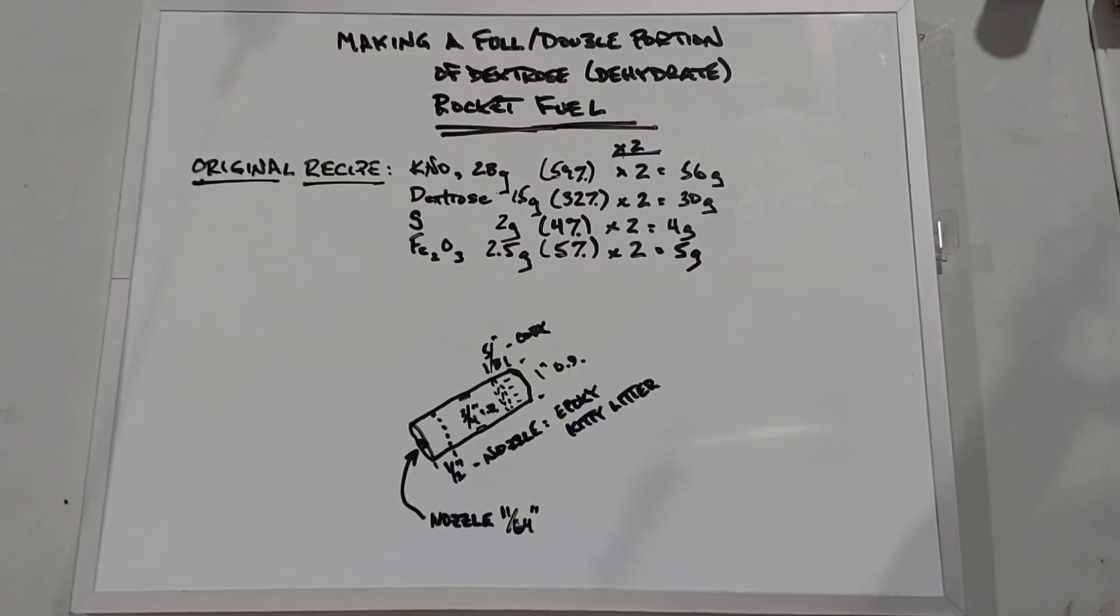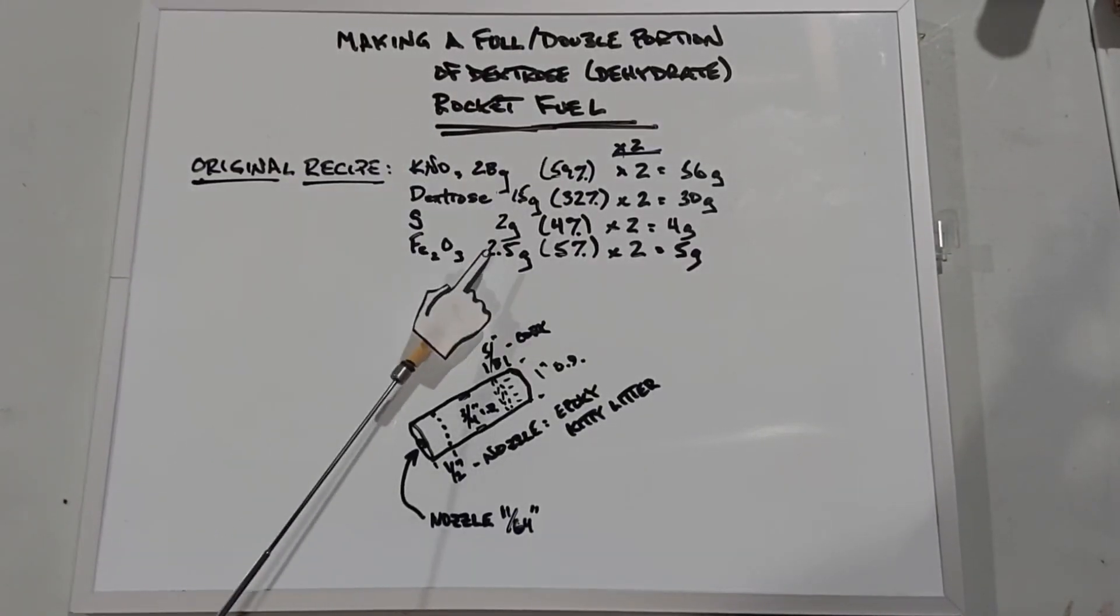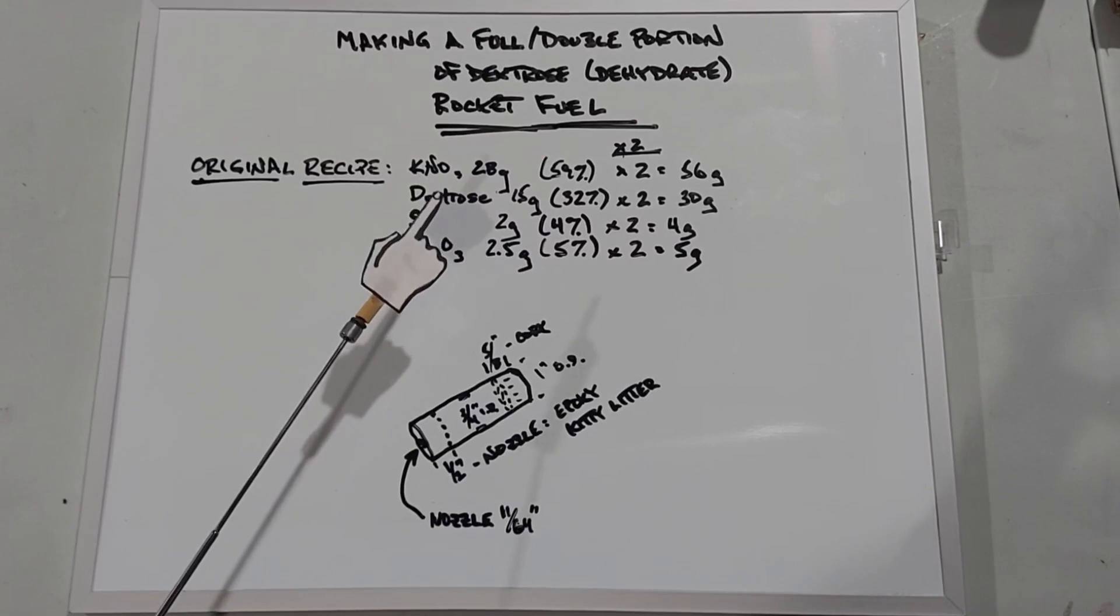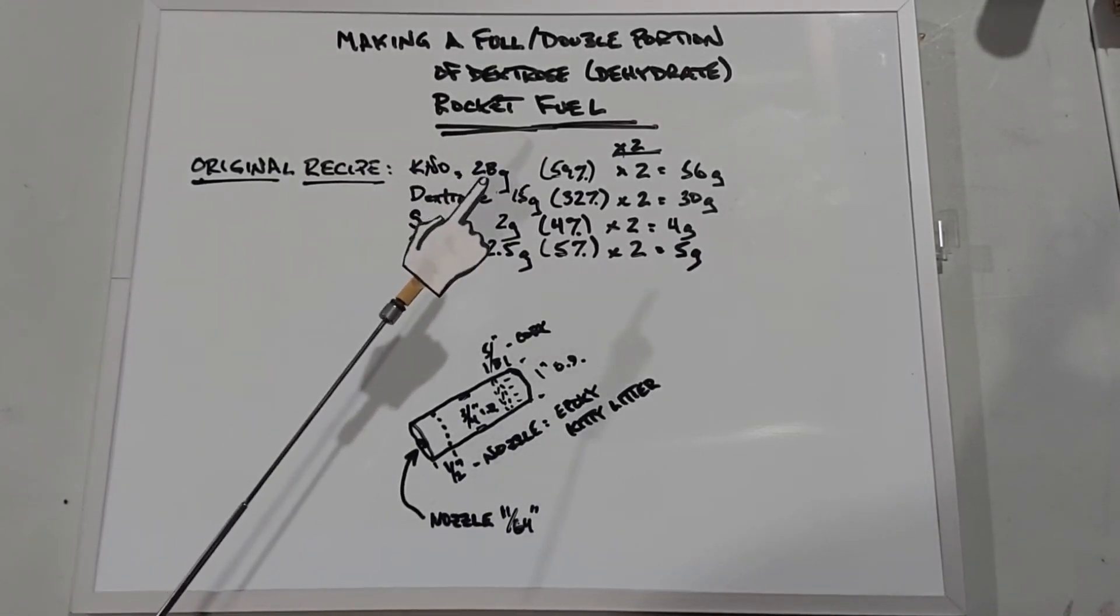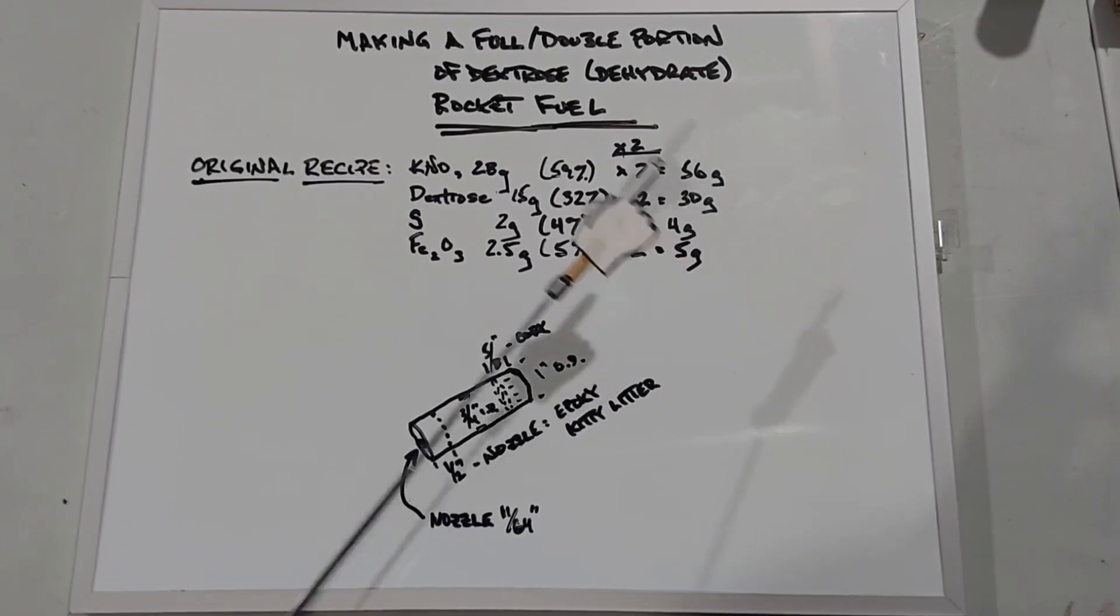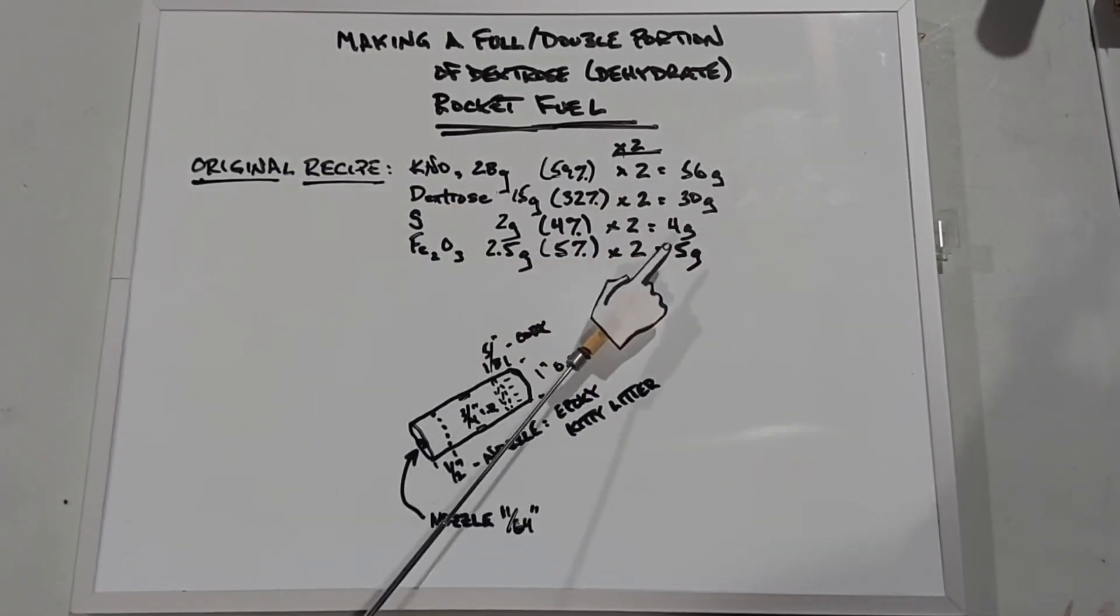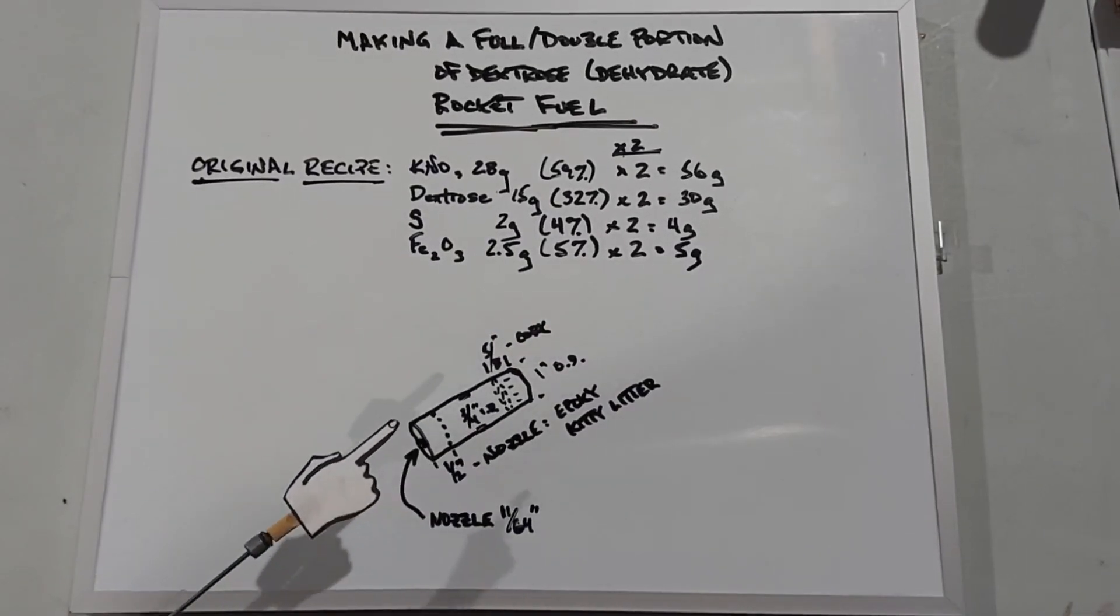Moving on here, the original recipe is right here for a dextrose rocket engine, partly tweaked by myself. When we did the test engines I cut this recipe in half, but to make the larger engine I'm going to double the original recipe. So potassium nitrate 56 grams, dextrose 30 grams, sulfur 4 grams, and iron oxide 5 grams.